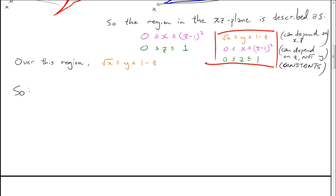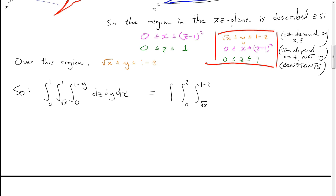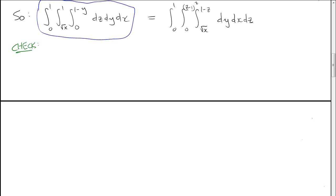The claim is that the original triple integral equals the rewritten one with order dy dx dz using these new bounds. If we're confident in the work, we can leave it there, but let's verify by carrying out both integrations.